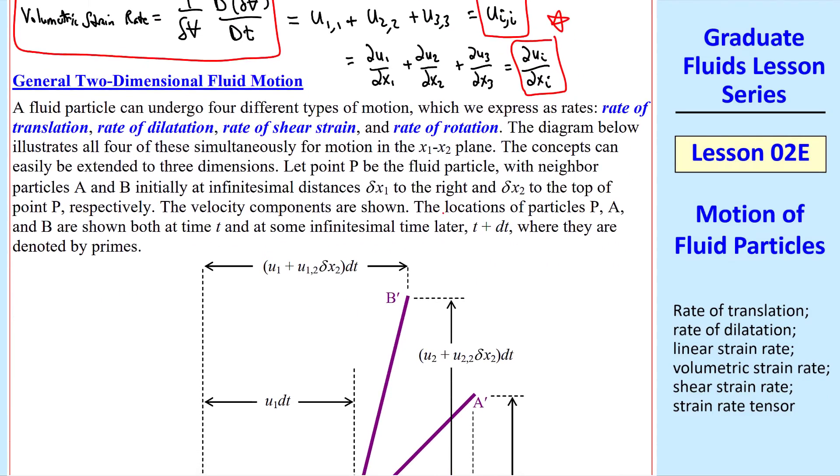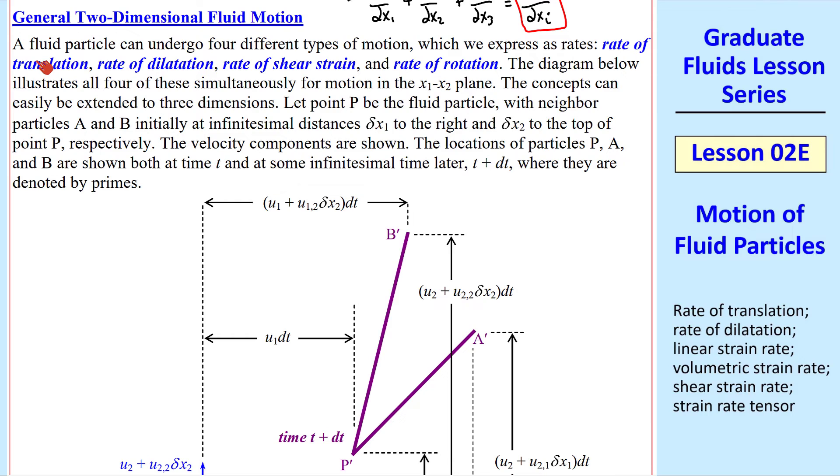Now let's look at general two-dimensional fluid motion. I'll quickly read this. A fluid particle can undergo four different types of motion, which we express as rates, as we talked about. Rate of translation and rate of dilatation, we've already talked about. We also have rate of shear strain and rate of rotation. In the diagram below, we show all four of these simultaneously.